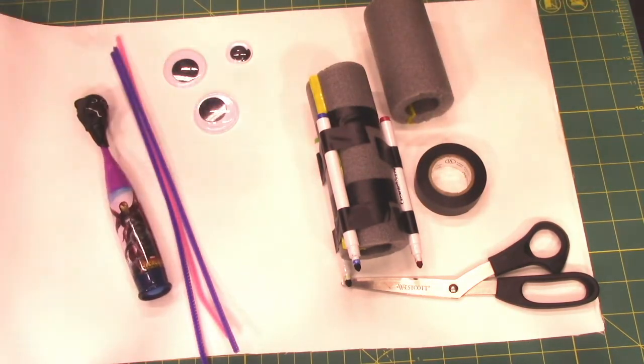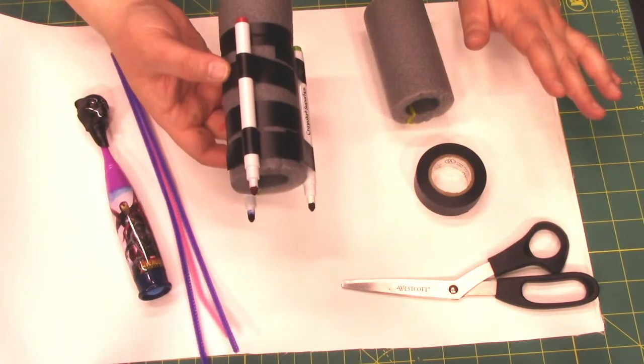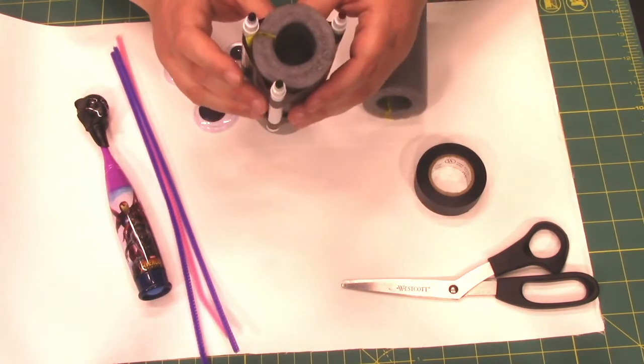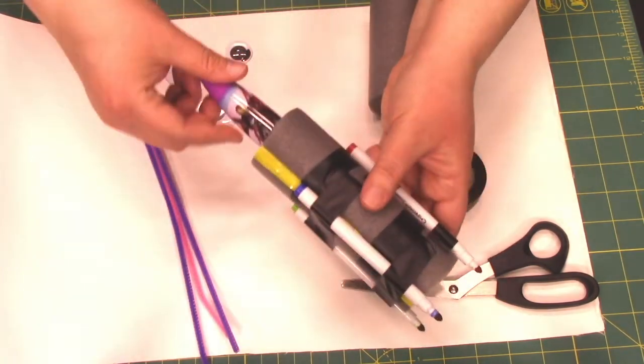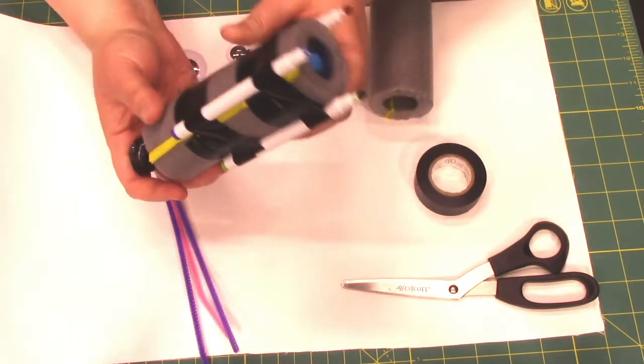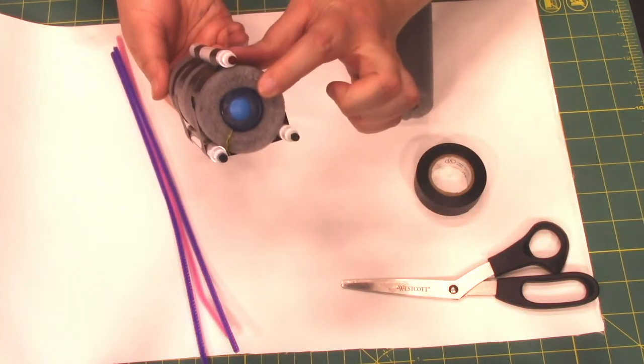So to get started, you want to take your insulation or pool noodle, whatever it is you're using, and you want to slip your toothbrush into the center. You want to make sure that you can still access the on-off switch on the bottom.